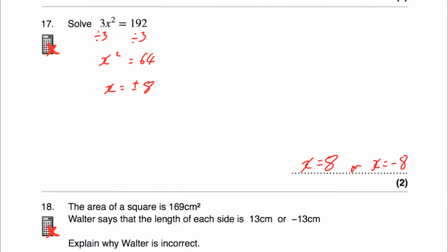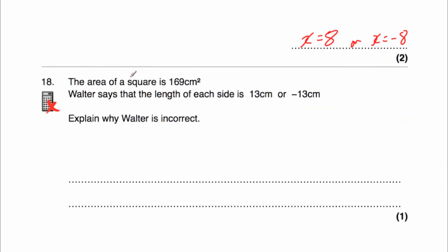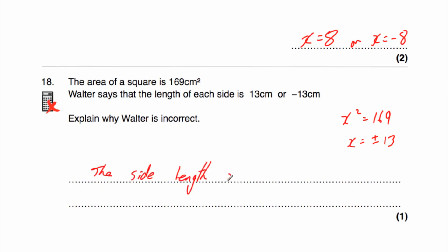Question 18: the area of a square is 169 centimetres squared. Walter says that the length of each side is equal to 13 centimetres or negative 13 centimetres. Explain why Walter is incorrect. If Walter was solving x squared equals 169, he would be right that x equals plus or minus 13. But we're dealing with a square and looking at the lengths of the sides, so we would just square root 169 to get 13. It couldn't be negative 13 because it's the length of a side, which cannot be a negative number. So the side length of the square cannot be negative.